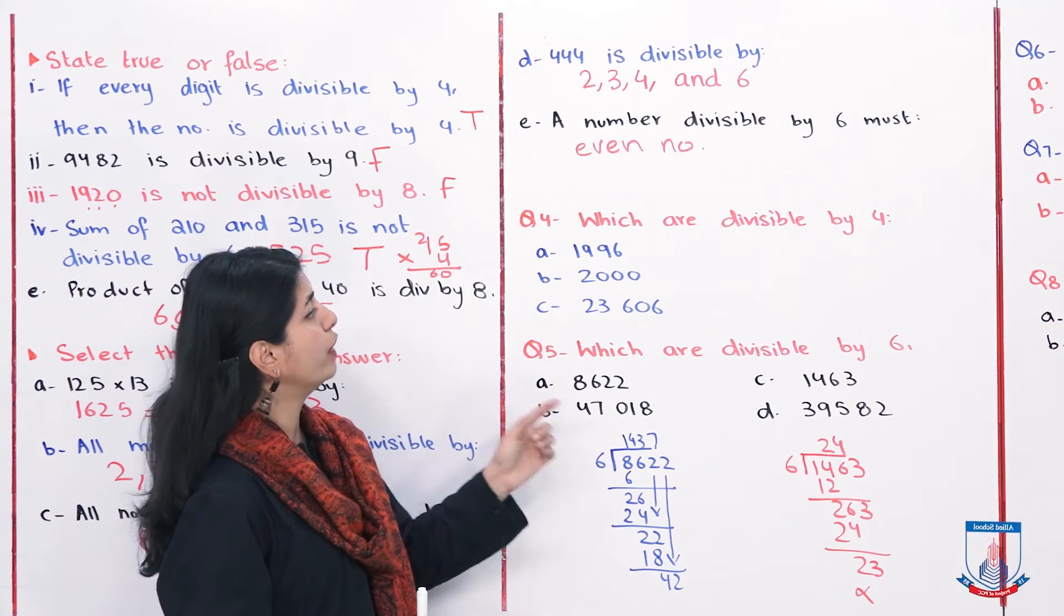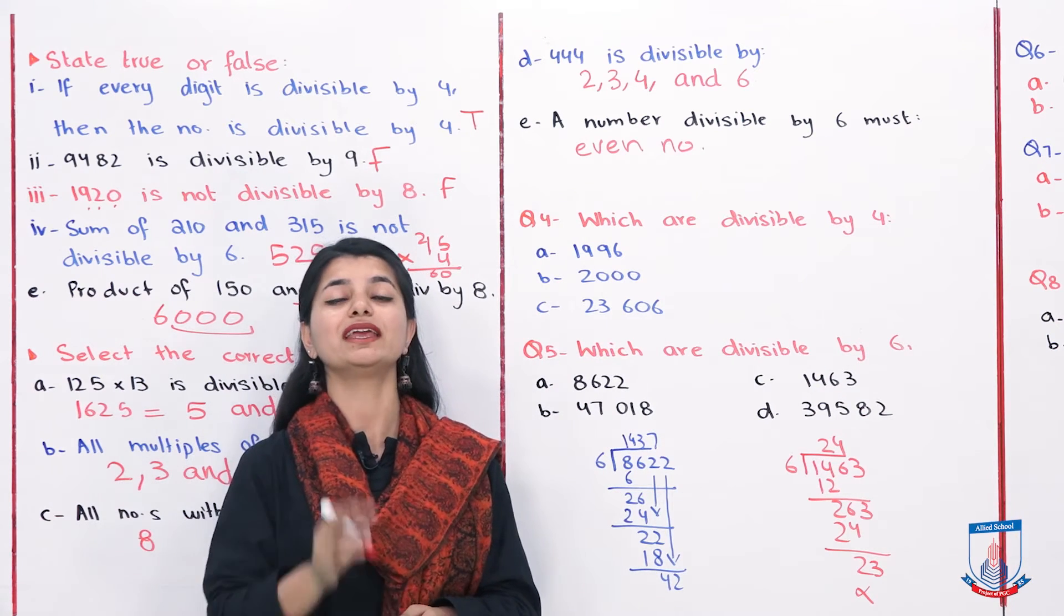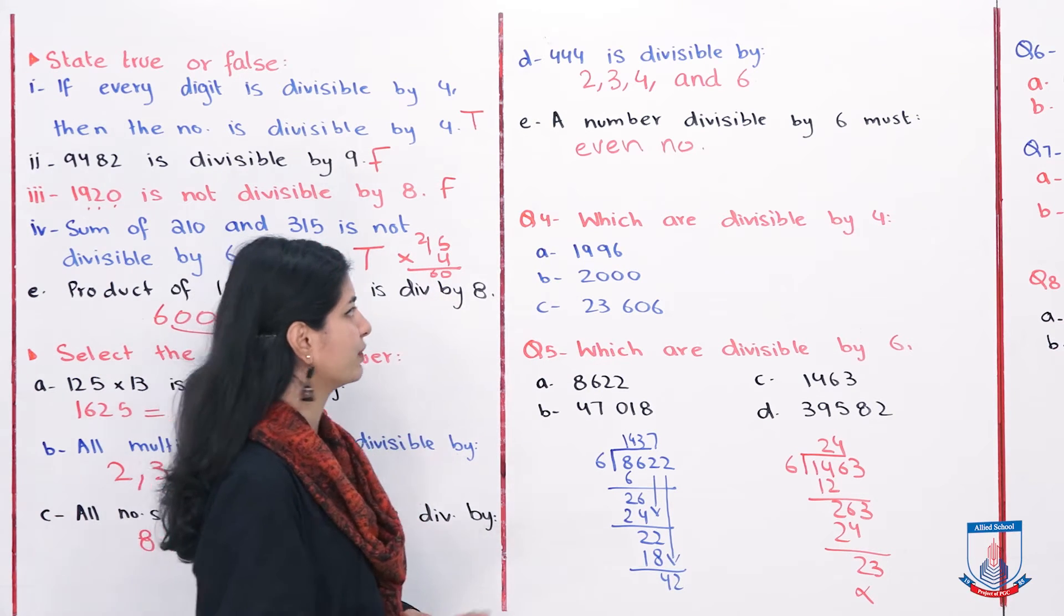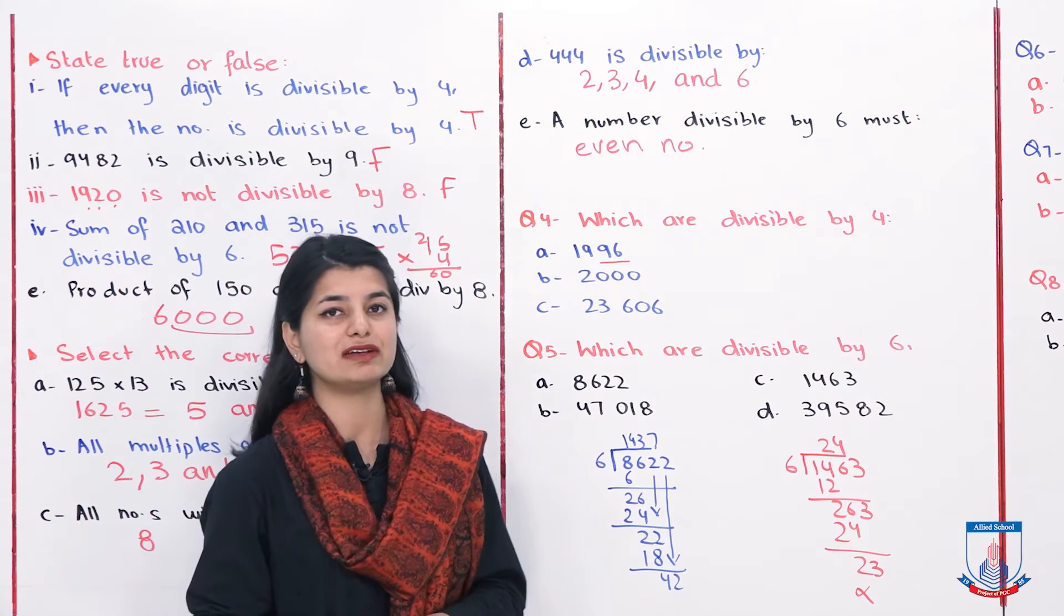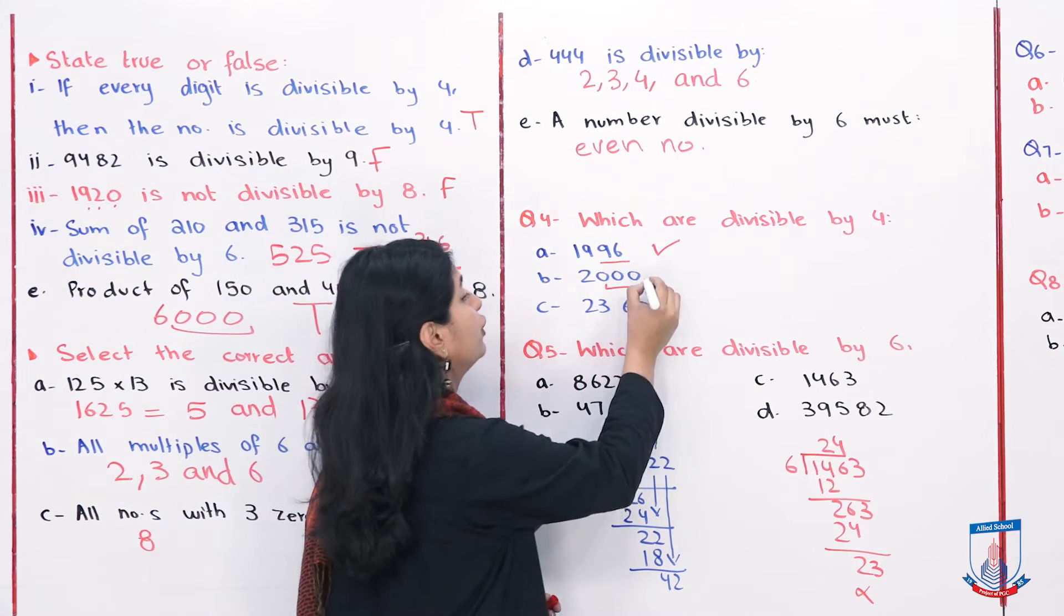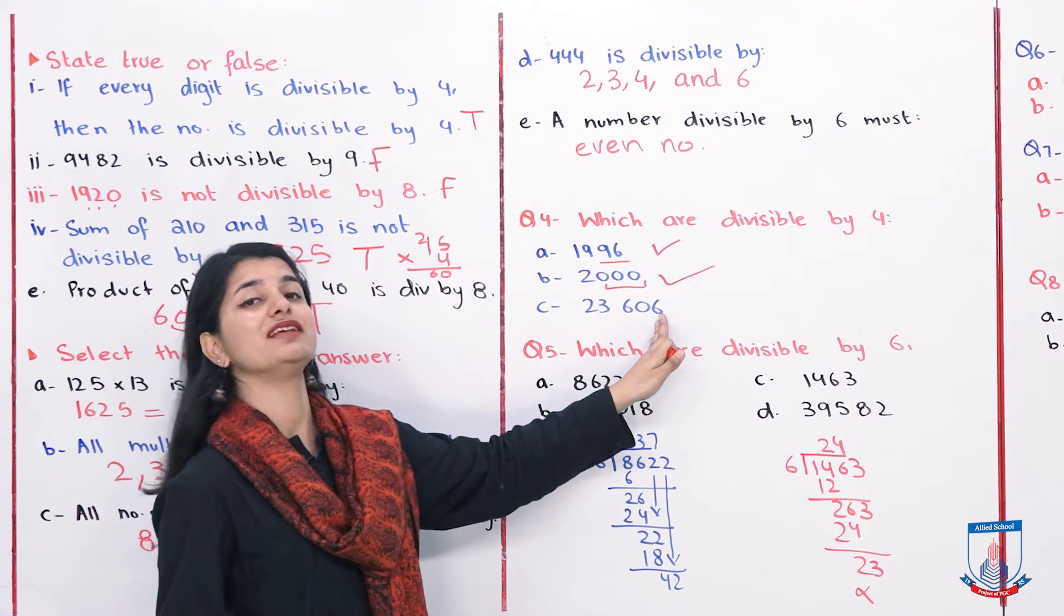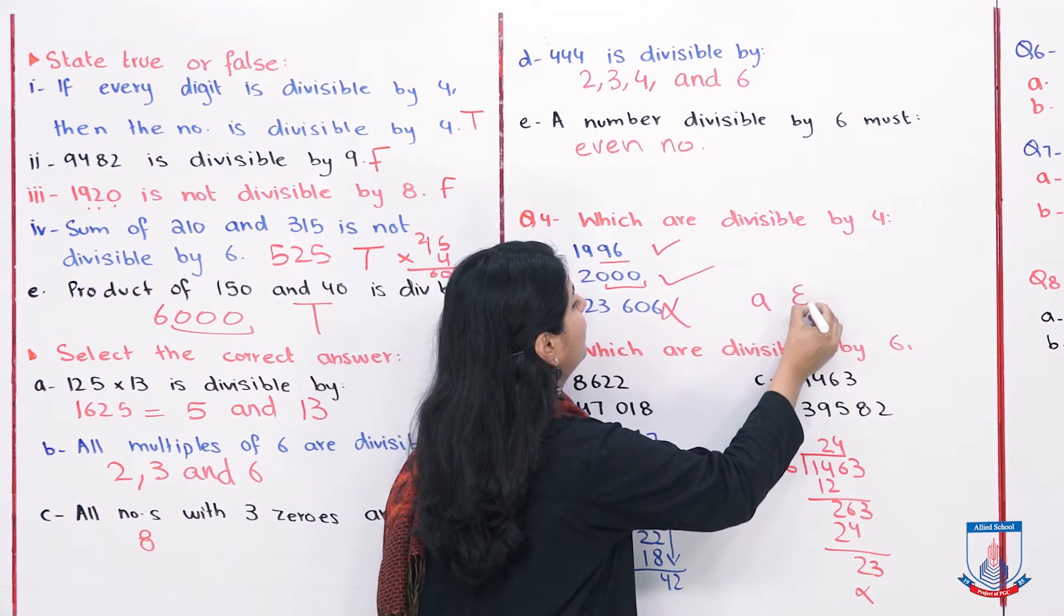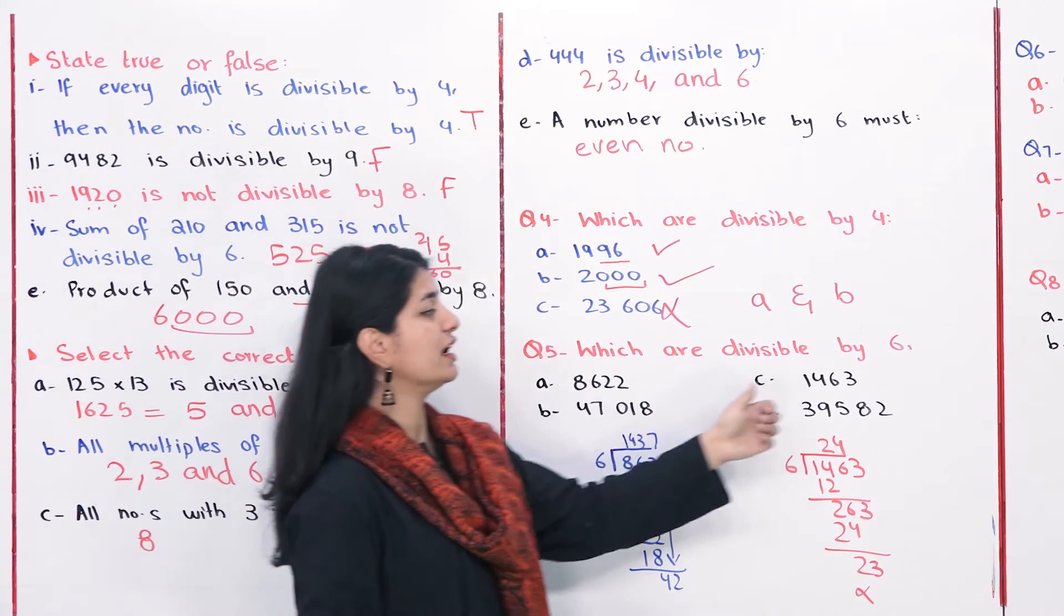Next we have question number 4: which numbers are divisible by 4? Remember the divisibility test for 4: if the last 2 digits are divisible by 4, it means the whole number is divisible by 4. So 96, is it divisible by 4? Yes, 96 is definitely divisible by 4. So A we have selected. And where there are two zeros at the end, that is also divisible by 4. So B is also correct. Where there is 06, is that divisible by 4? No. So your answer is A and B for this question.